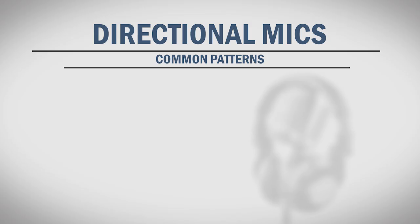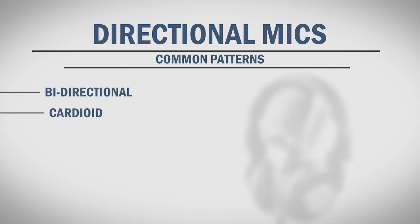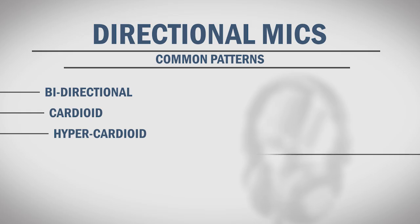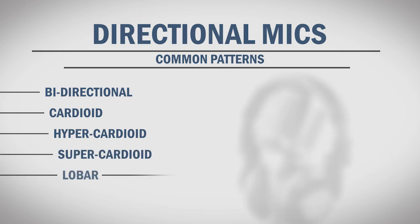Unlike omnidirectional mics, directional mics are designed to be more sensitive to sound coming from specific directions. The most common patterns that fall under this category are bidirectional, cardioid, hypercardioid, supercardioid, and lobar. Let's take a look at each one.